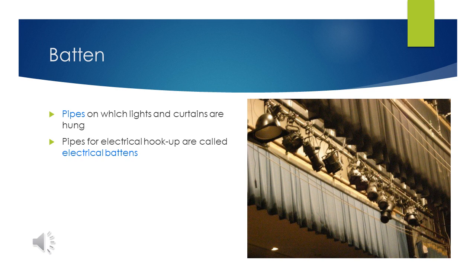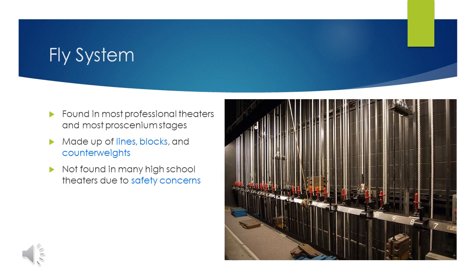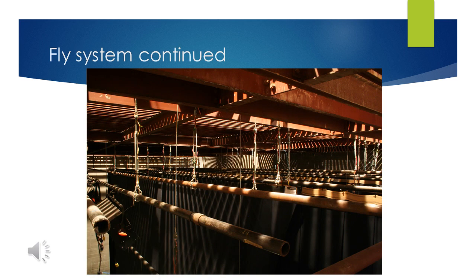Batons are pipes on which lights and curtains are hung. Pipes that allow for electrical hookups are often called electrical battens. Batons are usually hooked up to a fly system, found in most professional theaters, mostly with proscenium stages. They are made up of lines, which are ropes; blocks, which are the pulleys; and counterweights. Sadly, very few high school theaters have fly systems due to their safety concerns. If you continue on to the theater tech class, we will go over these more. The picture on the right is what a fly system looks like on the ground floor, and this is a picture of what the fly system looks like up in the rafters. Since we do not have a fly system, we often use lifts to reach that level to change the lights or the curtains.